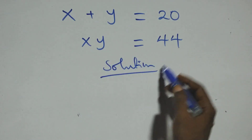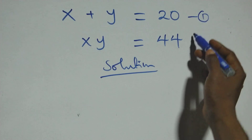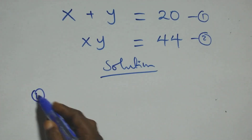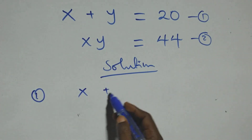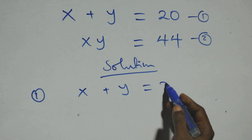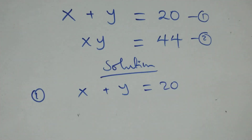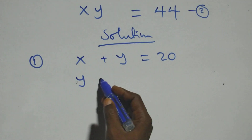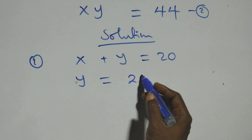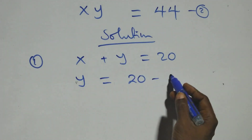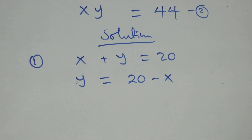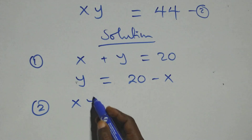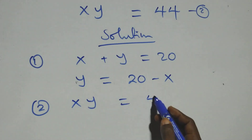Let's label this as equation one and this as equation two. Then from equation one, which is x plus y equals 20, we can make y the subject of the formula. That is, y equals to 20 minus x. Then also from equation two, which is x times y equals 44.